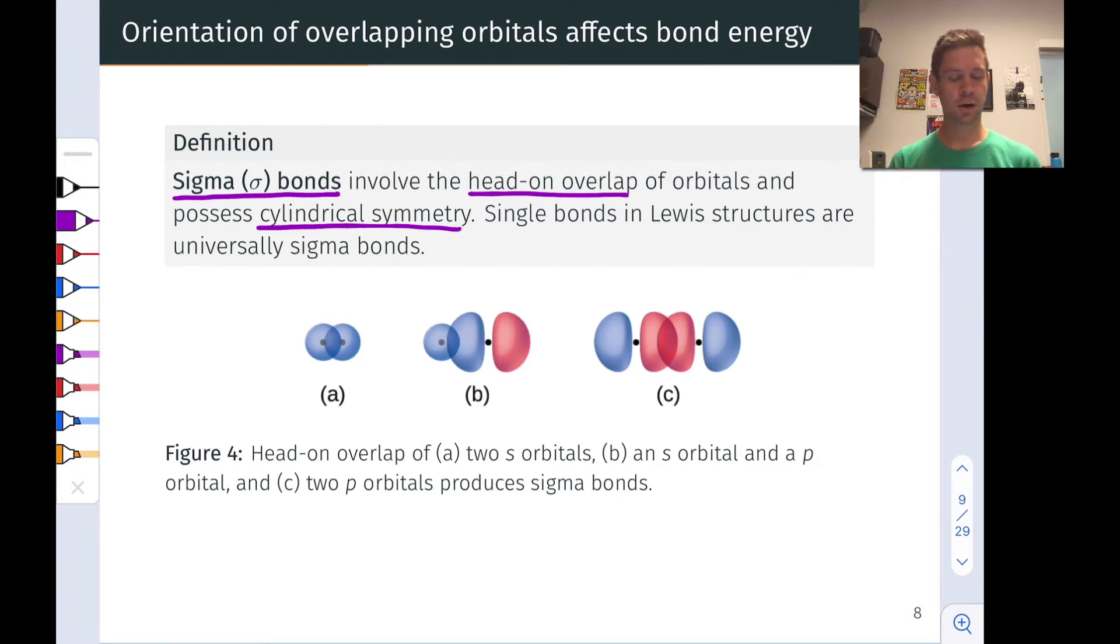Three examples of sigma bonds are shown for you on this slide. So here, for example, in A, we have two S orbitals overlapping with each other. Here's the overlapping region. And you can imagine that if we turned this to kind of look down the bonding axis where the nuclei were sort of eclipsing one another, we would see a circle, since each of the S orbitals is individually spherical.